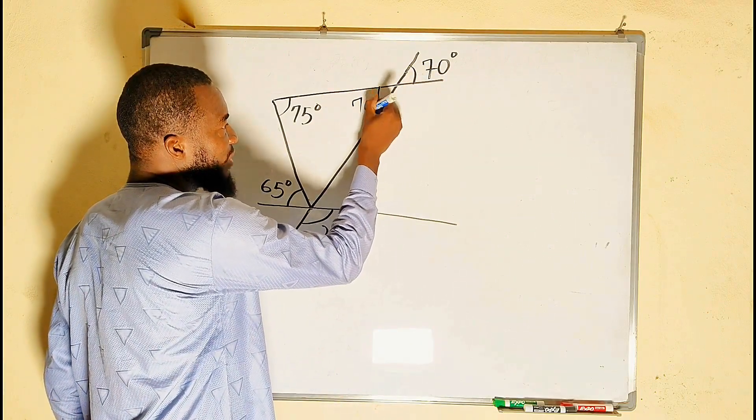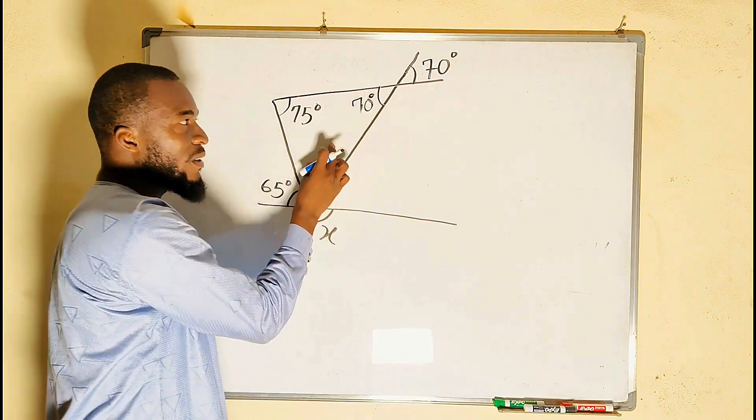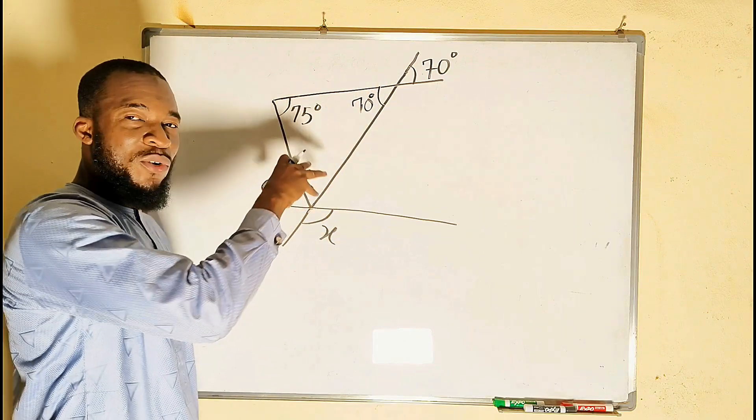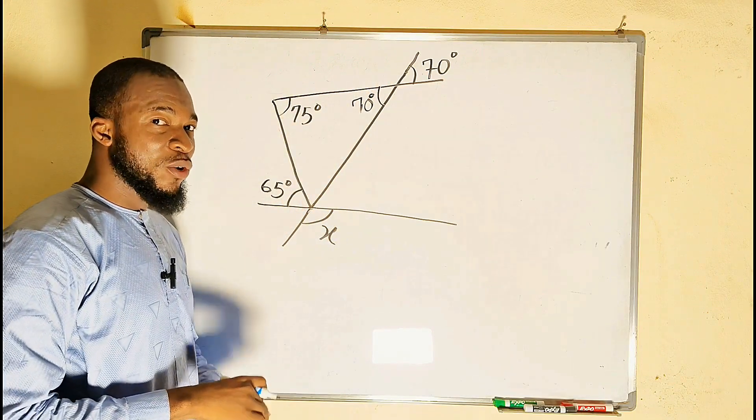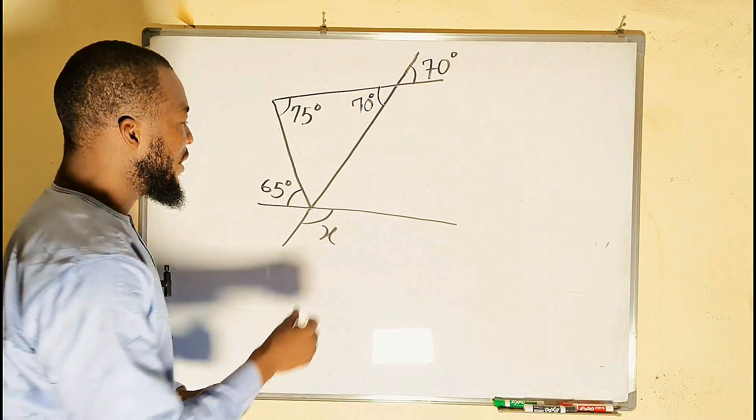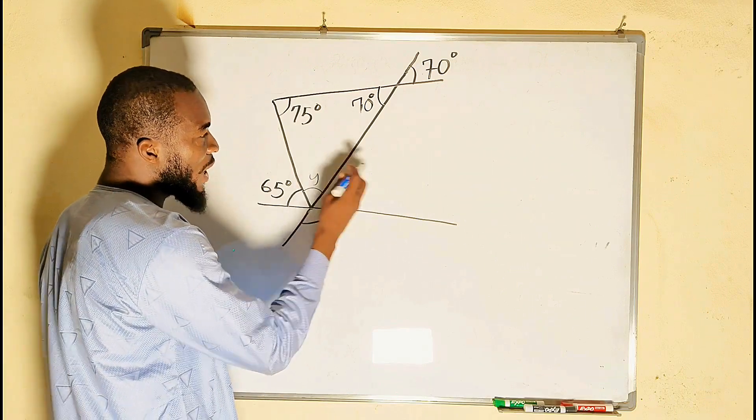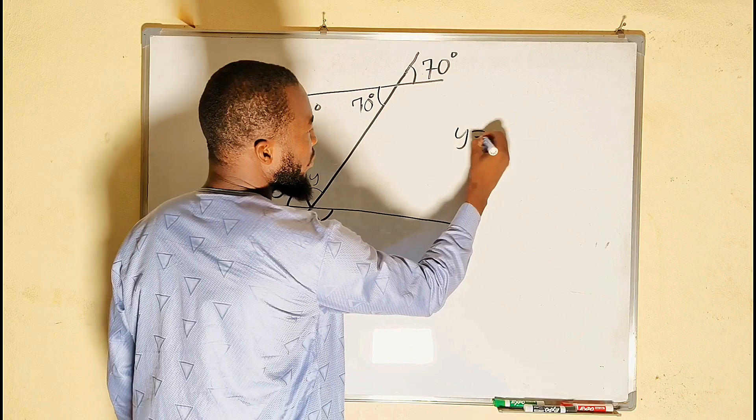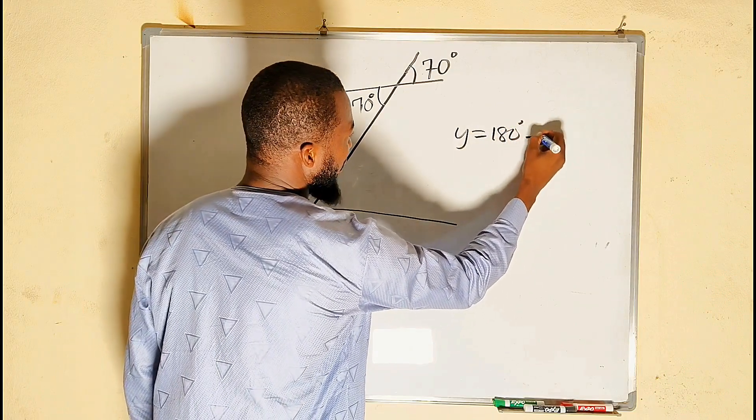So this must be 70 degrees as well, and this is a triangle. The sum of all the interior angles of a triangle equals 180. So to find this particular angle, let me call it y. Y will be equal to 180 degrees minus...